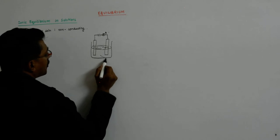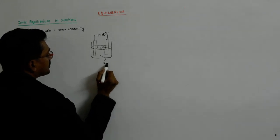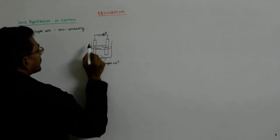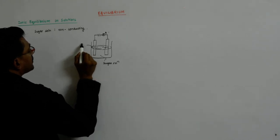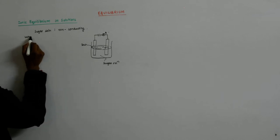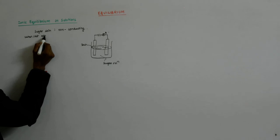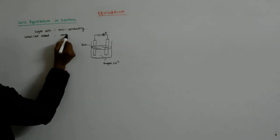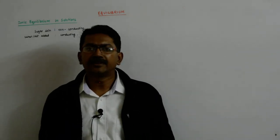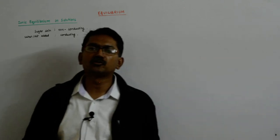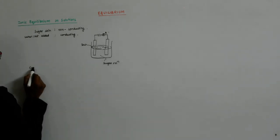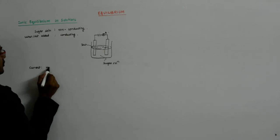Now if you add some salt into this sugar solution, then it starts conducting. When salt is added to it, it becomes conducting. Now if it became conducting, it means there was movement of some charge, because current is movement of charges.